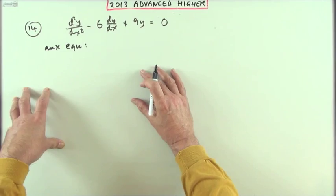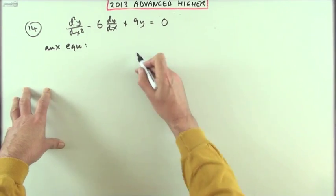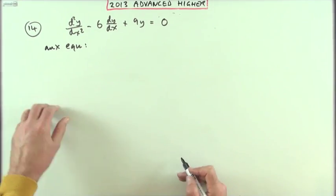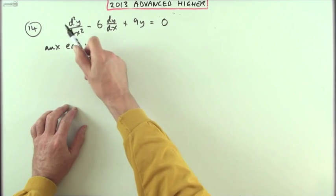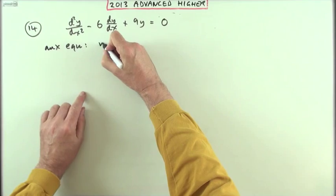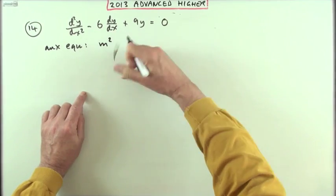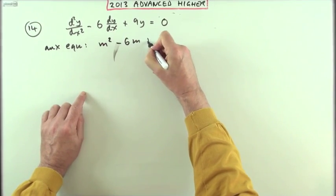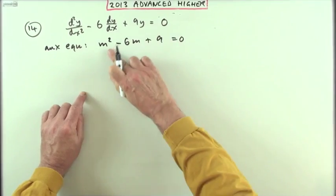Without going into why this is formed, basically your auxiliary equation is made up from the coefficients of the three terms formed into a quadratic. So m² - 6m + 9 = 0.